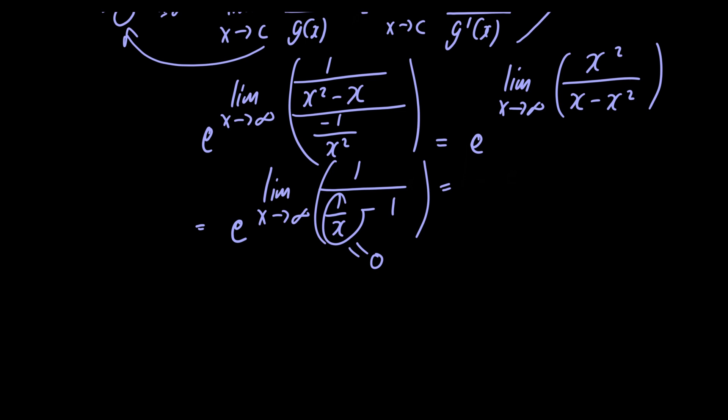and we're just left with the limit as x approaches infinity of -1, as 1 divided by -1 is -1. So we have e^(-1), and this is just equal to 1/e, and that is the final answer to the problem.